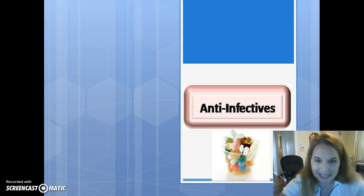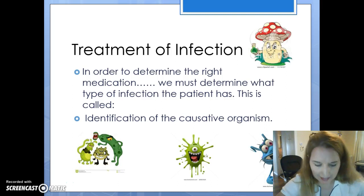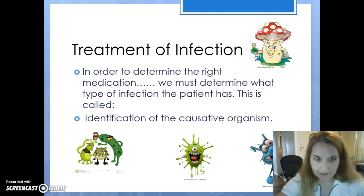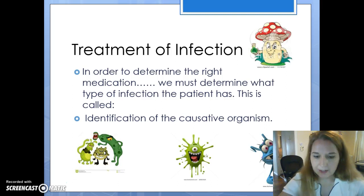Hello, this is Professor Barker again and we're going to talk about anti-infectives. There's no such thing as a magic antibiotic that successfully treats every single infection. There are dozens of different antibiotics and other anti-infective medications because each one is best at treating specific infections. In order to determine the right medication, we have to first determine what kind of infection the patient has. This is called identification of the causative organism.